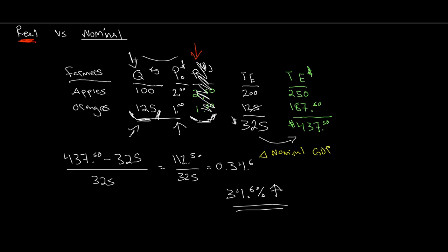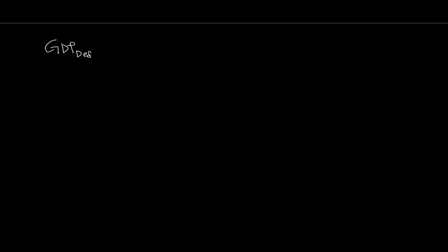We're trying to measure how much stuff, how much output we produce as a nation. Real GDP is the better statistic to estimate the amount of production. One of the ways we account for this is using a tool known as the GDP deflator. You can do a Google search for the current value of the GDP deflator in Canada or any country. These are calculated by central statistics agencies in each respective country.